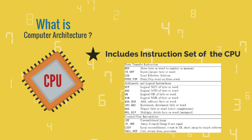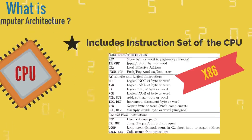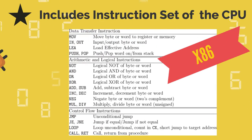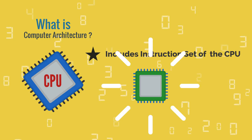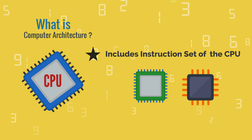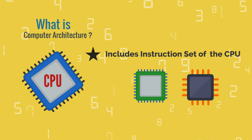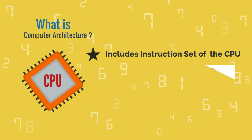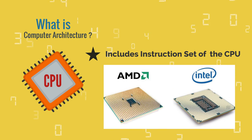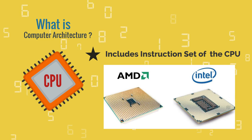An example of an instruction set is the x86 instruction set, which is common to find on computers today. Different computer processors can use almost the same instruction set, while still having very different internal design. Both the Intel Pentium and AMD Athlon processors use nearly the same x86 instruction set.